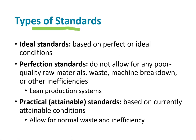There are different types of standard costs. There are ideal standard costs based on perfect or ideal conditions. Perfection standards do not allow for any poor quality raw materials, waste, machine breakdown, et cetera — and that's what we use in lean production systems, as we discussed in a different chapter. Sometimes this is a cultural thing: the Japanese would use a perfection standard, whereas in the United States we typically use what's called a practical standard, based on currently obtainable conditions. We allow for normal wastes and inefficiencies — it's a mindset and a way of setting benchmarks.